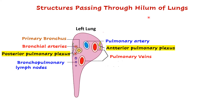Now, structures passing through the hilum of lung — these are going to enter or leave the lung, and they come mainly from the blood vessels in the mediastinum, the trachea, and the heart. You need blood vessels including arteries and veins, a bronchus to take air into the lung, and lymphatics to drain the lung. So these are the structures that will be present.